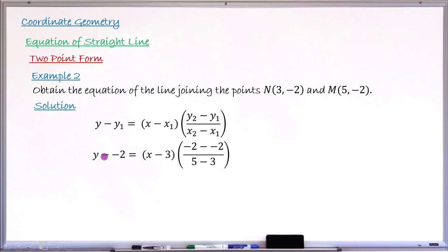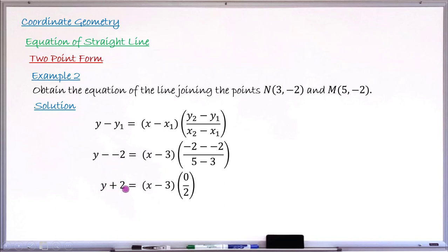Substituting: y₁ is minus two, so we have y minus minus two. x₁ is three, so the first bracket is x minus three. Inside the large bracket: y₂ minus y₁ is minus two minus minus two, and x₂ minus x₁ is five minus three. Simplifying: y minus minus two becomes y plus two. The numerator minus two plus two equals zero, and the denominator five minus three gives two.